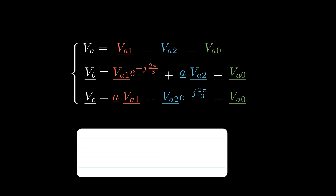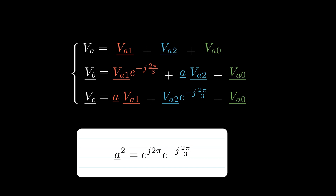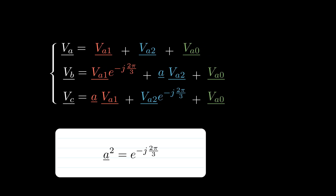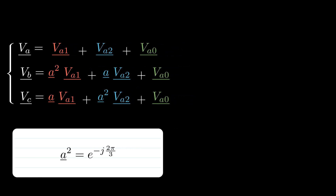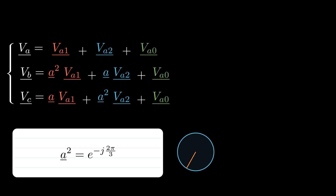Now, observe what happens when we calculate A squared. We express the exponent as 6 minus 2, then apply exponential rules to write it as a product of two complex numbers. The first term represents a 2π rotation, which is equivalent to multiplying by 1. So we get A² = e^(j·−2π/3). This makes sense, since two counterclockwise rotations of 2π/3 should be equivalent to a single clockwise rotation of 2π/3.